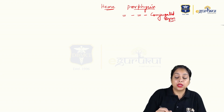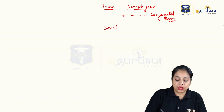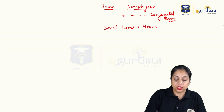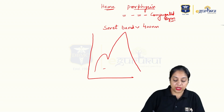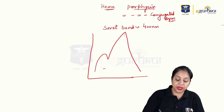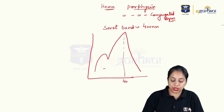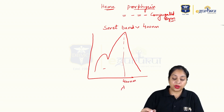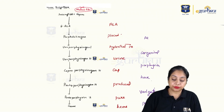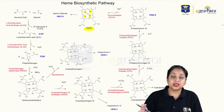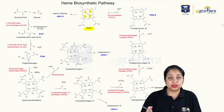Because of this conjugated porphyrin system, heme gives the Soret band at approximately 400 nanometres. When we take the absorption spectra, we see a peak at approximately 400 nm wavelength, which is known as the Soret band — peculiar to heme because of its double bond–single bond conjugated system.